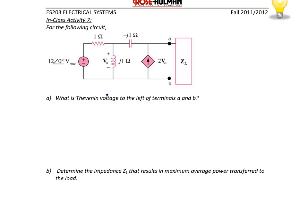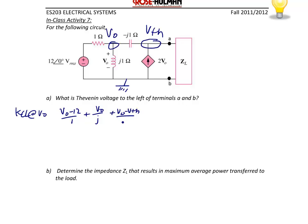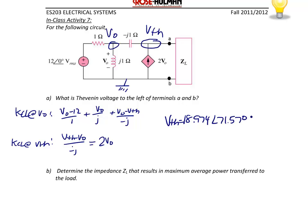Let's look at one more example. To find the Thevenin voltage, this circuit has a dependent source. To find Z_Thevenin we'll use the test source method. Since V_Thevenin is just the open circuit voltage, removing the load makes this node V_Thevenin, this is ground, and this node is V0. Using the node voltage method: KCL at V0 gives (V0−12)/1 + V0/j + V0/(−j) = 0. KCL at V_Thevenin gives (V_Thevenin − V0)/(−j) = 2V0. Solving these two equations and two unknowns gives V_Thevenin = 18.974∠71.57° volts.